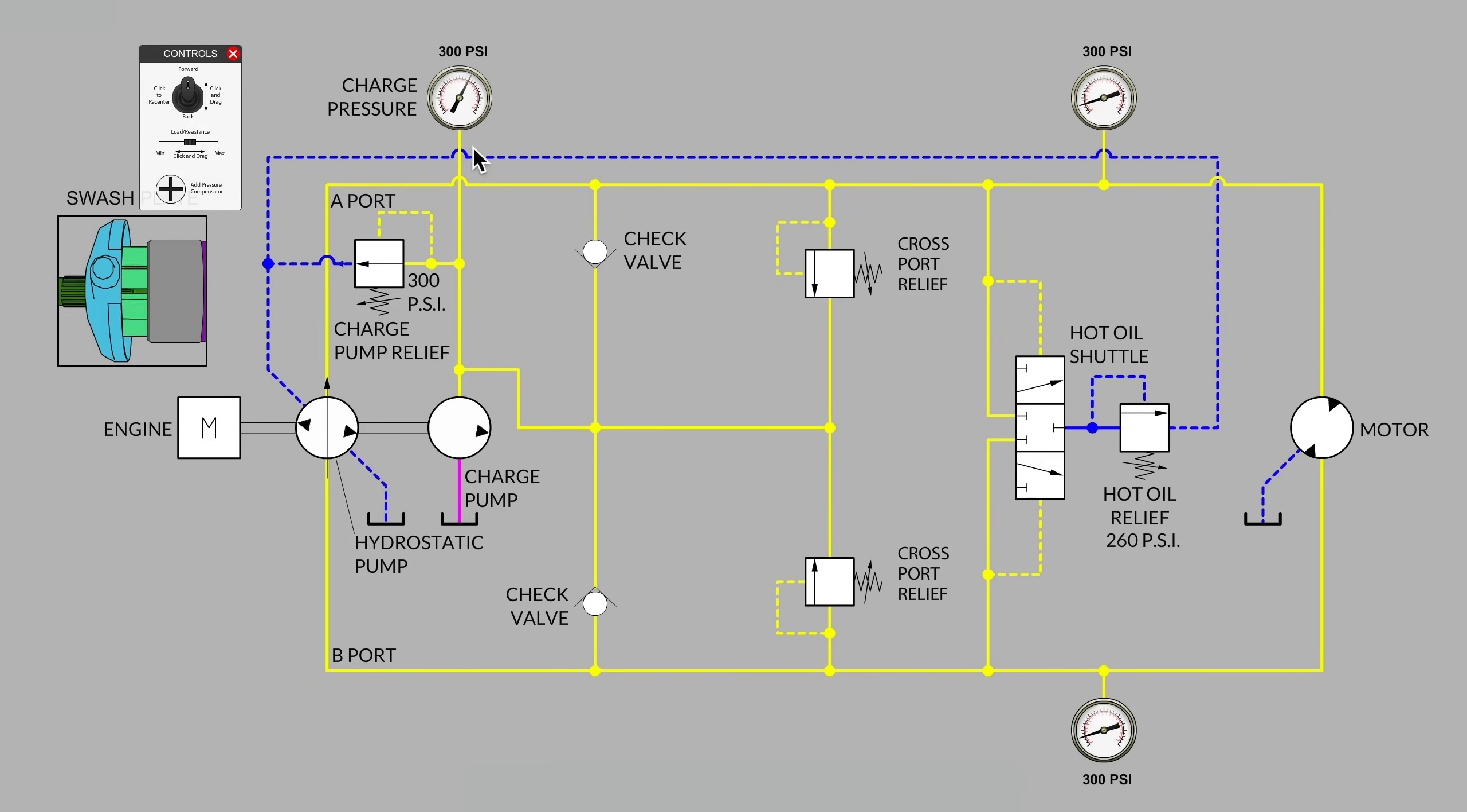So right now our charge pressure gauge is reading the setting of the relief valve that is open for that smaller charge pump. There's nowhere else for the flow to go right now, because when the pump's displacement is put in neutral, the charge pump pushes against the A and the B side of the loop. But unless there is some internal leakage on the A or the B side of the loop, there really isn't much flow moving through those check valves. But the A and B side loop will remain pressured at the charge pump rate.